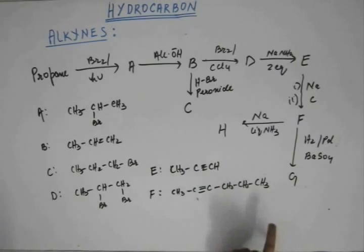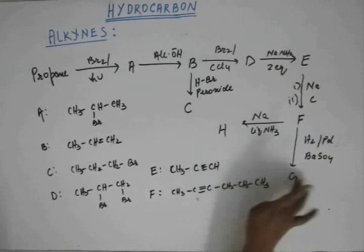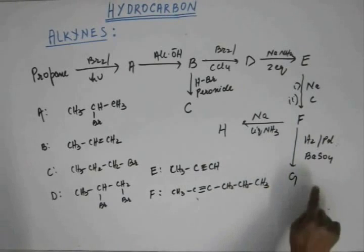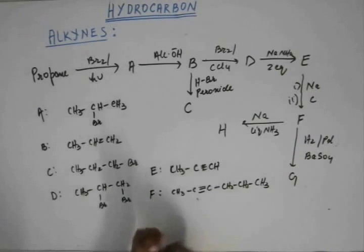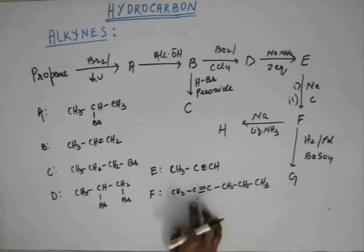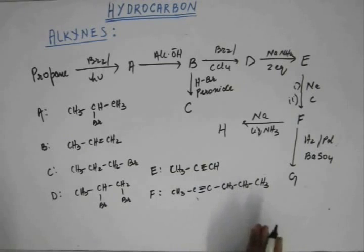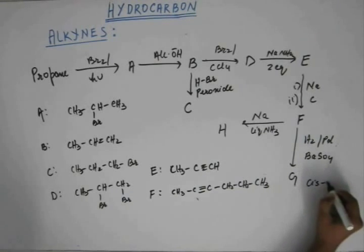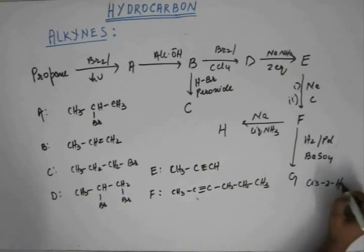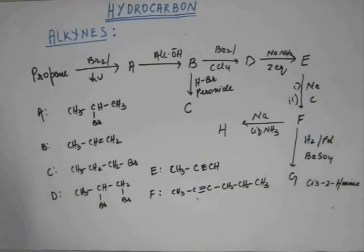Now, from F, you are getting H and you are getting G. And this is the reaction that we studied in the method of preparation of alkene. And this is reduction of alkyne. And when you add H2, H2 gets added from the same side. So, this is going to give you the cis-alkene. So, G would be 2-hexene. But this is going to be, G will be cis-2-hexene.